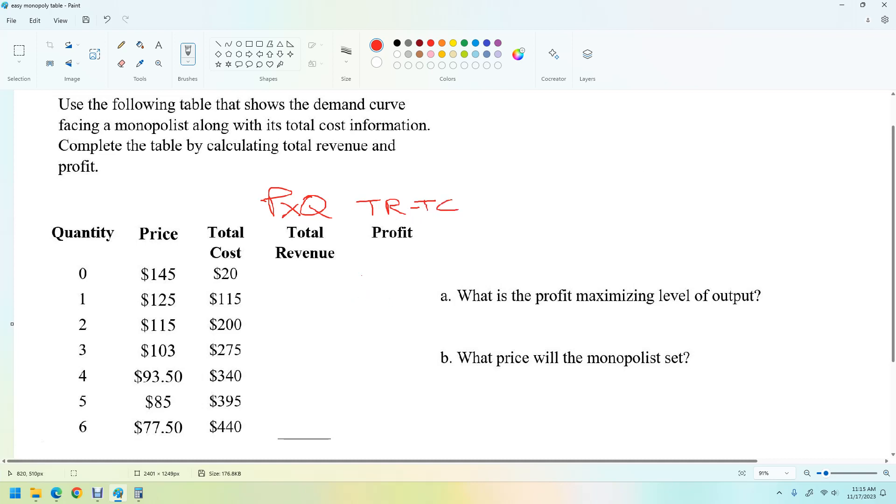OK, so at the first one, we can do the first couple in our head. It would be 145 times zero, so it'd be zero. Second one, 125 times one, 125. The next one, 115 times two would be 230. Oh, I guess I can do most of these in my head.